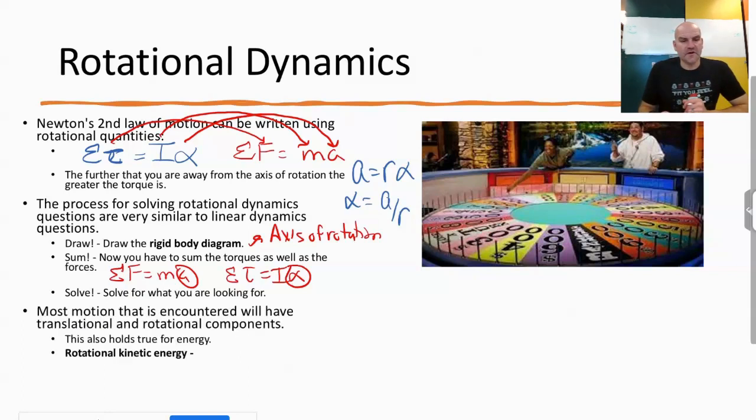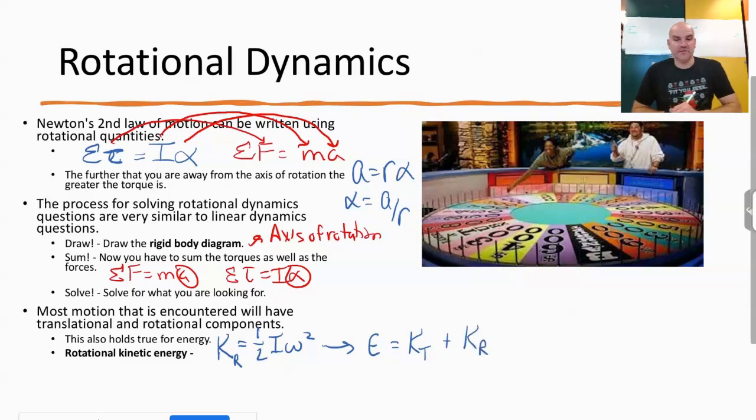And also in dynamics, we'll talk just really briefly about energy as well. So most motion that is encountered will have translational and rotational components. Well, this also holds true for energy. And so the rotational kinetic energy now is something that we have to factor in. Rotational kinetic energy, we'll put a sub R there, is one half I omega squared. So what that does now, in addition to having our translational kinetic energy, which is one half mv squared, we now also have our rotational kinetic energy, which is one half I omega squared, plus any potential energy.